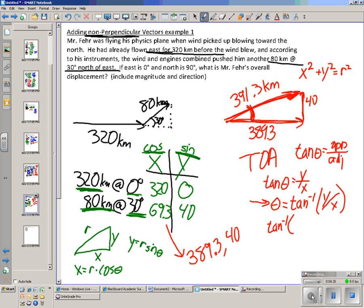Tapping into my calculator, tan to the minus one, 40 divided by 389.3, close parenthesis, enter. I get about, that was theta that I was solving for, theta equals 5.866 degrees.